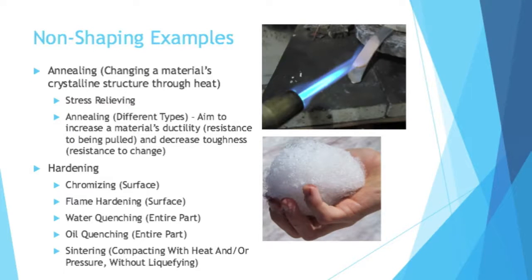Now we move on to the next big category: if you're not shaping something, you're probably changing its structure or surface. First we have annealing — changing a material's crystalline structure through heat. You can do that to stress-relieve an object. Annealing aims to increase a material's ductility, meaning resistance to tensile forces, but it also decreases toughness — resistance to having its shape changed. So annealing makes the object stronger when being pulled but easier to bend or reshape.